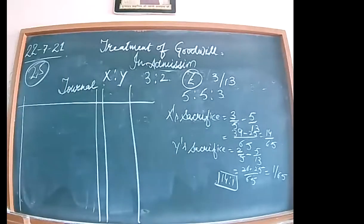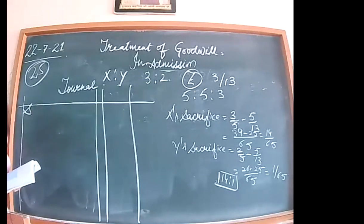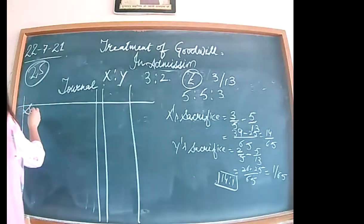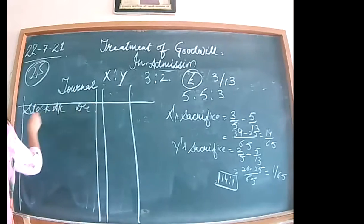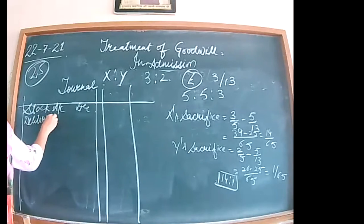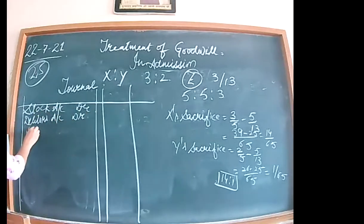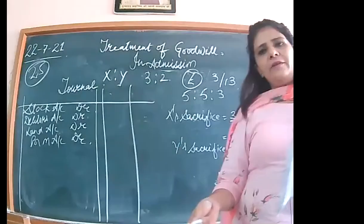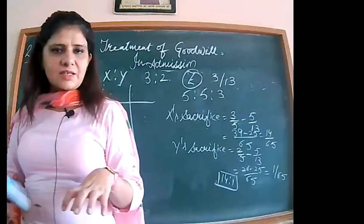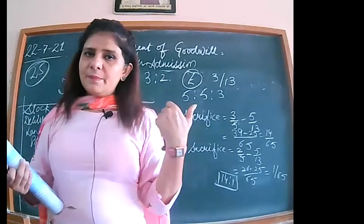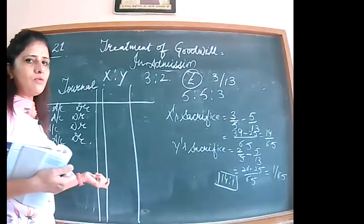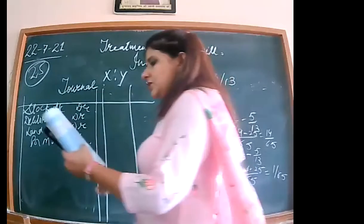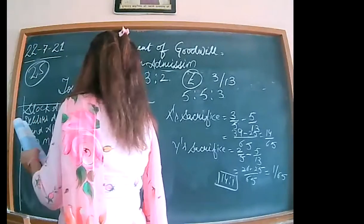First entry — since the assets are brought in kind: stock account debited, debtors account debited, land account debited, plant and machinery account debited. Just as in an opening entry where we bring all last year's asset balances forward, here Z is bringing assets to cover both his capital contribution and premium for goodwill. The amounts are: stock 80,000; debtors 1,20,000; land 20,000; plant and machinery 1,20,000 — totalling 5,20,000.